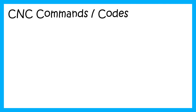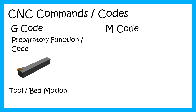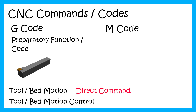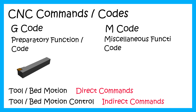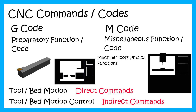While programming any CNC program, we use a variety of codes. Most common and popular among them are G-codes and M-codes. G-codes are known as preparatory functions or preparatory codes and are used for tool motion and tool motion control directly or indirectly. M-codes are known as miscellaneous functions or miscellaneous codes and are used to turn on or off machine tool's physical functions such as spindle motor rotation, cutting fluid, etc.